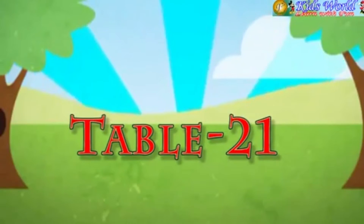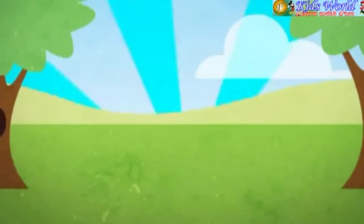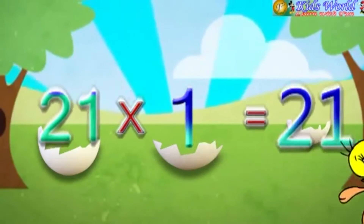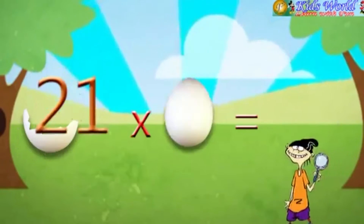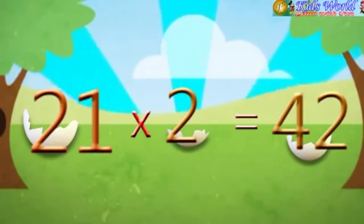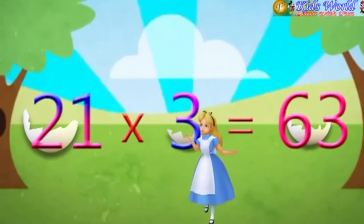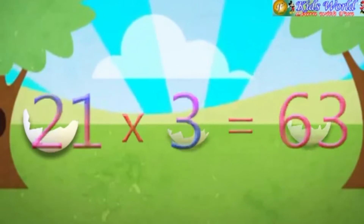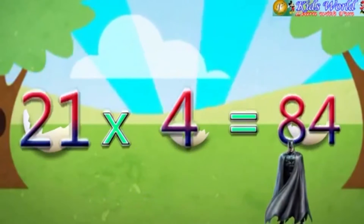Table 21. 21 into 1 is equal to 21. 21 into 2 is equal to 42. 21 into 3 is equal to 63. 21 into 4 is equal to 84.